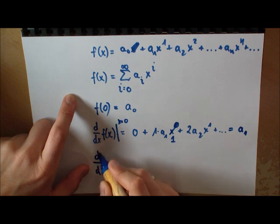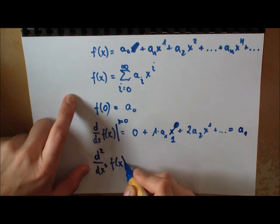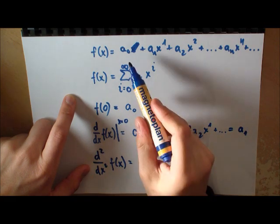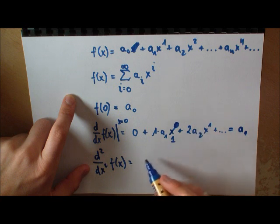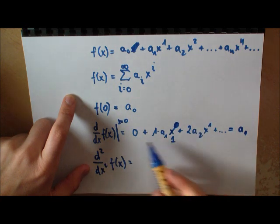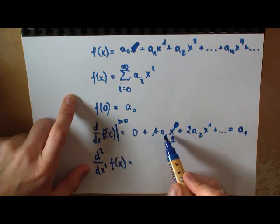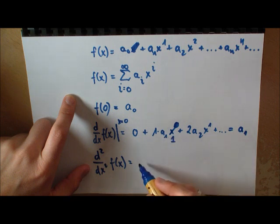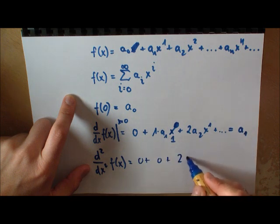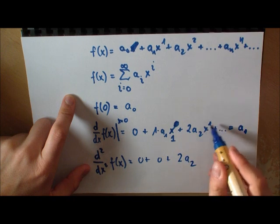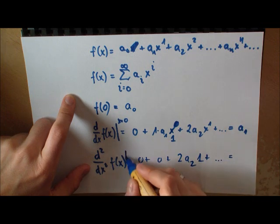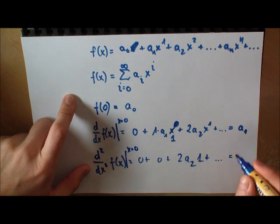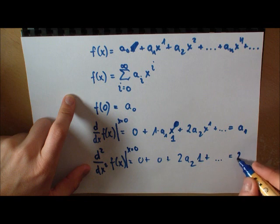We just differentiate the function two times. If you would just do this, I just had this and you differentiate it again. What you will get is, this will be still 0, this is a constant part. This will become 0. Here you will get 2a₂. This will become 1. If we evaluate at x equals 0, what will we get? We get 2a₂.